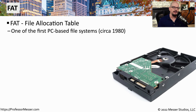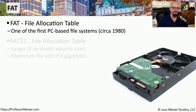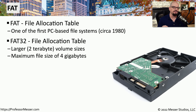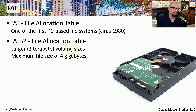One of the very first file systems used in the PC world is the FAT file system — the File Allocation Table. The most recent version is FAT32, which supports two terabyte volume sizes and a maximum file size of four gigabytes.